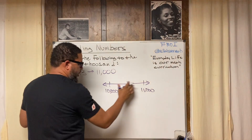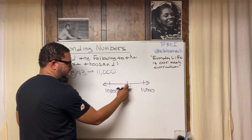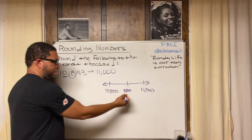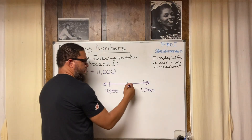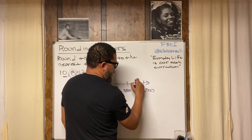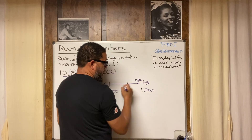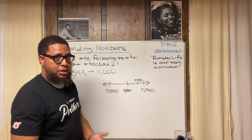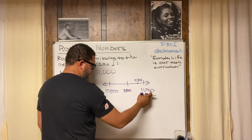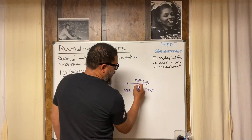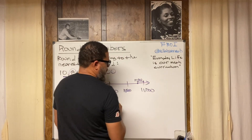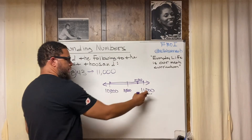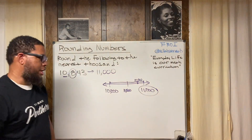Now we plot 10,843 on the number line. Since 843 is bigger than 500, the number falls between 10,500 and 11,000, actually closer to 11,000. The question is: which thousand is nearest? Looking at the number line, the distance from 10,843 to 11,000 is much shorter than the distance from 10,843 to 10,000. So the nearest thousand is 11,000.